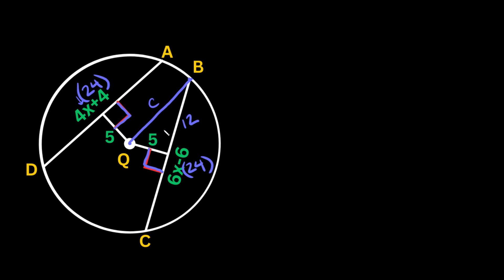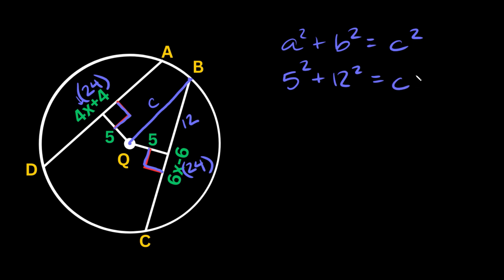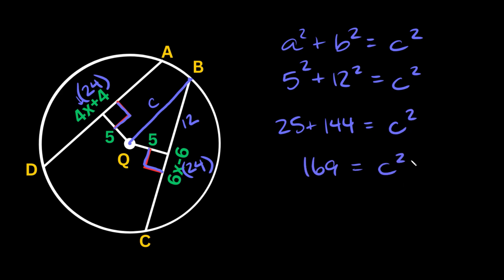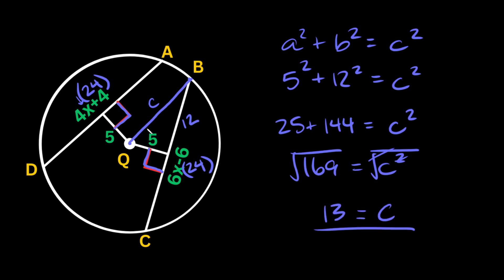Using the Pythagorean theorem again: a squared plus b squared equals c squared. We have 5 squared plus 12 squared equals c squared, which is 25 plus 144 equals c squared, giving 169 equals c squared. Taking the square root of both sides, c equals 13. So the radius of this circle is 13.